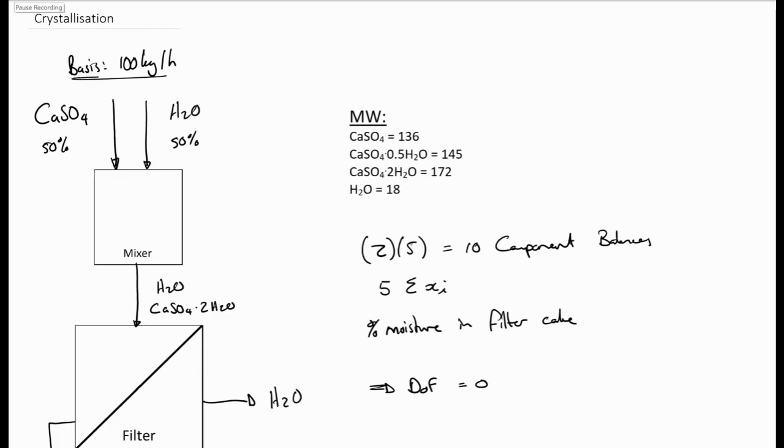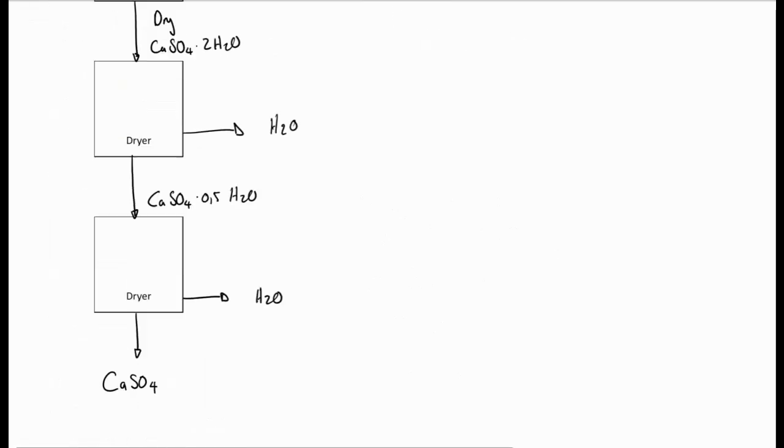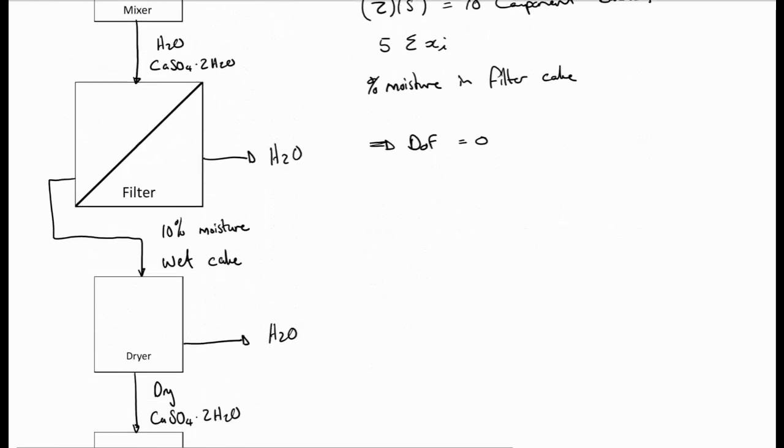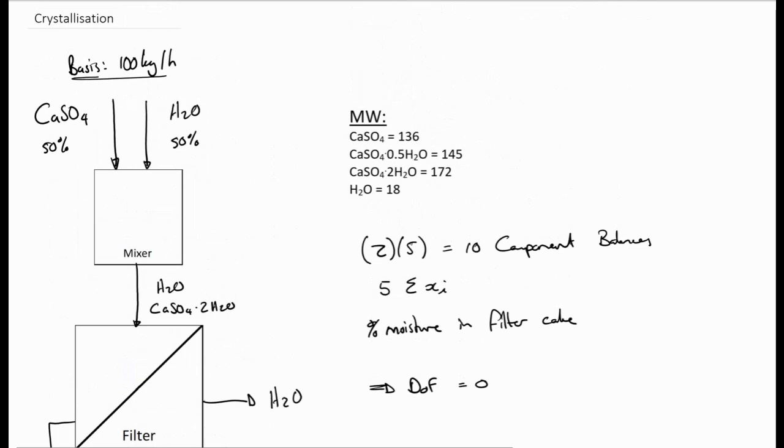Let's say you started with step 1 and you've gone through them and you end up with this. So we have a whole system. We have all the additional information. We have our base. And we know that there's 10 component balances, 5 sum of fractions. We're given the moisture content in the filter cake. Once we do a degree of freedom analysis, we see that the degree of freedom of the system is 0 and we know that we can solve it.